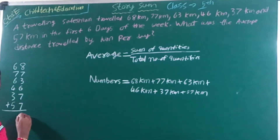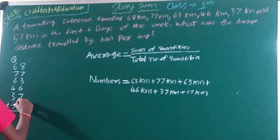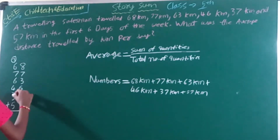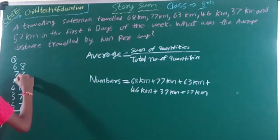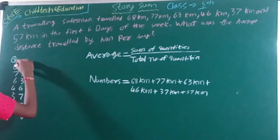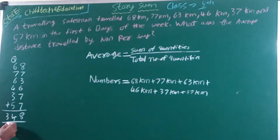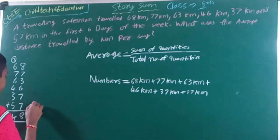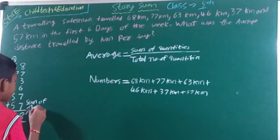3 will carry to the tens place. Then 5 plus 3 is 8, plus 4 is 12, plus 6 is 18, plus 7 is 25, plus 6 is 31, plus 3 is 34. The answer is 348, and this is the sum of quantities.